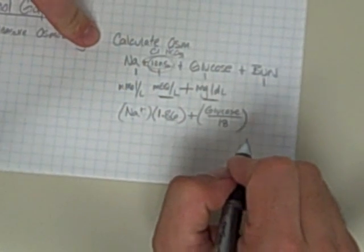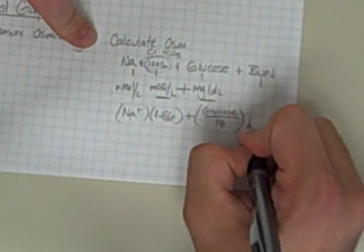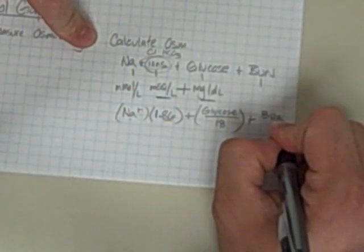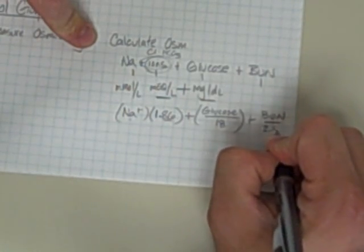And that gets it in terms of millimoles per liter. And likewise with the BUN, I can just divide that by this factor of 2.8.